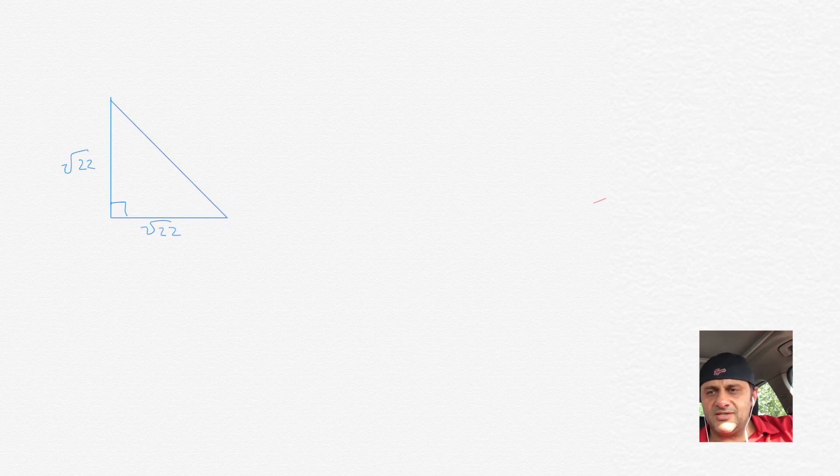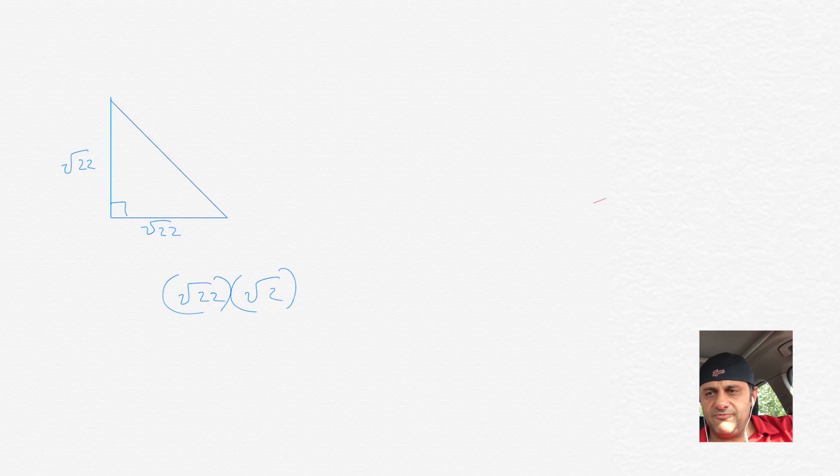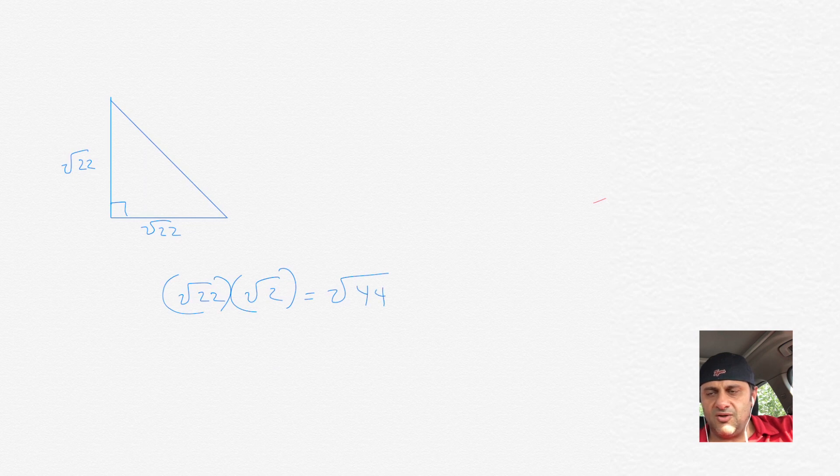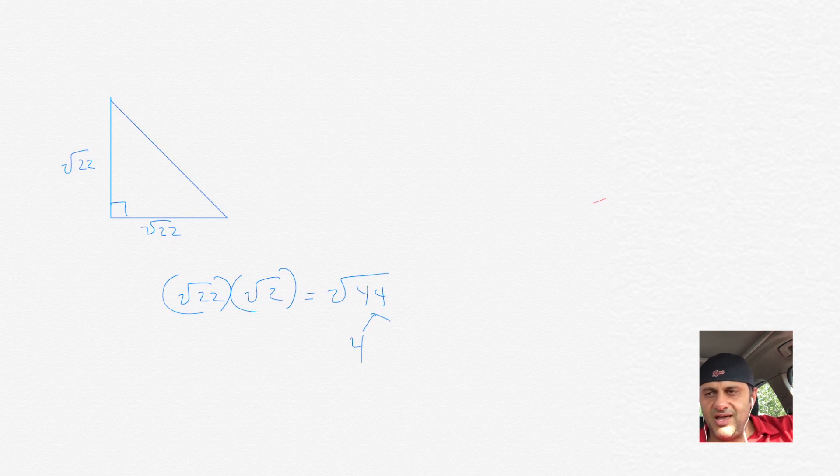Anytime you have this kind of right triangle where two sides are equal, the hypotenuse will just be whatever that side is times the square root of 2. So here, we have the square root of 22 as each side, and then the hypotenuse would then be the square root of 22 times the square root of 2. To do that, you could literally just multiply 22 times 2, and then all of it would be in a square root. So the hypotenuse then would be square root of 44.